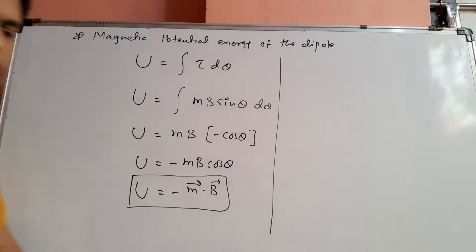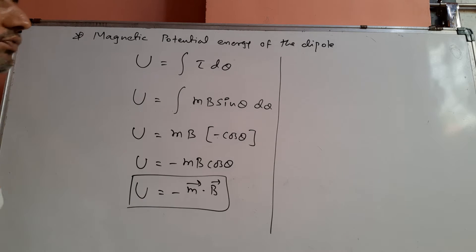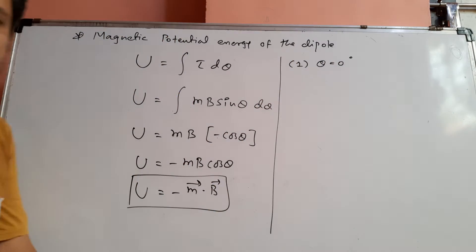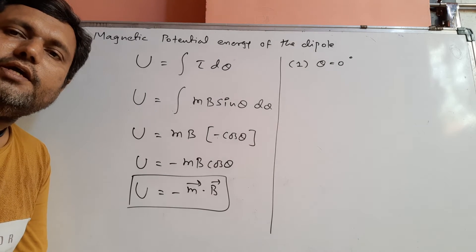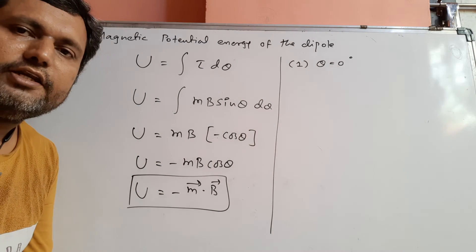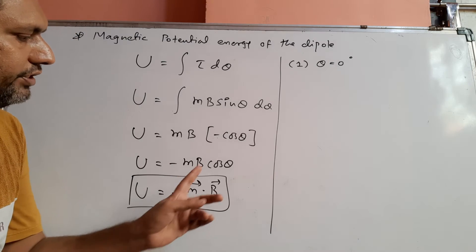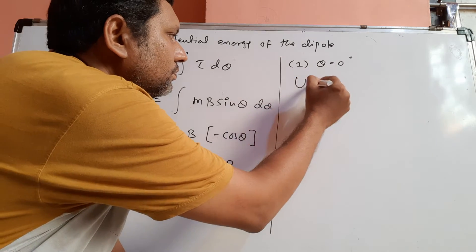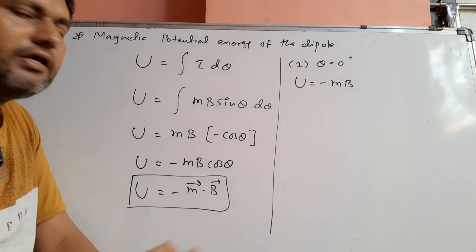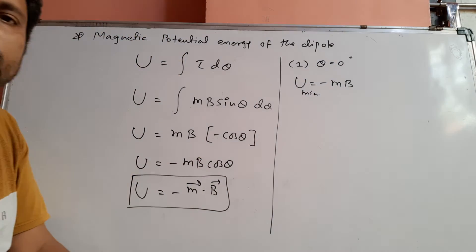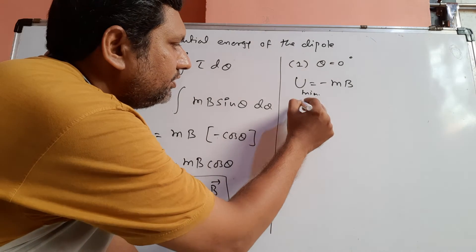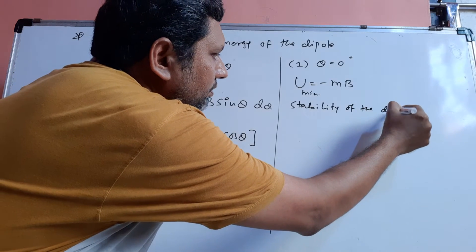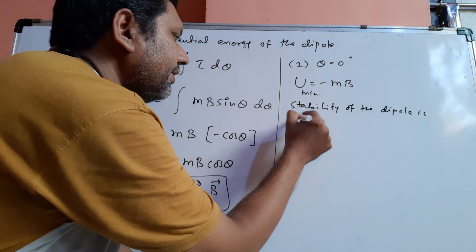Now we will discuss some special cases. First, if theta equals 0 degrees, it means the magnetic dipole is parallel to the direction of the magnetic field. Here cos 0 is 1, so U equals minus MB. This is the minimum potential energy, which means the stability of the dipole is maximum.